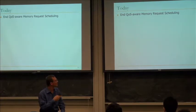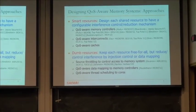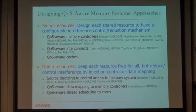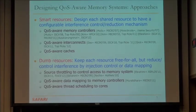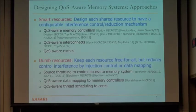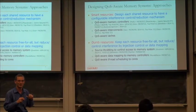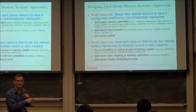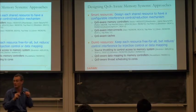Today we'll cover quality-of-service-aware memory request scheduling. How do you design a QoS-aware memory system? Basically, you could design the resources to be smart — smart cache, smart interconnect, smart memory scheduler — and ensure that each resource has an interference control mechanism. The other approach is dumb resources: keep each resource free-for-all, but control the injection into the system such that you have a better overall fair system. These are not necessarily incompatible — you could combine them. You've seen some of this with source throttling when we talked about interconnection networks: you could throttle the sources injecting into the network to get higher performance and a more fair system.